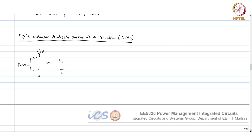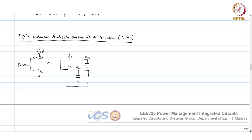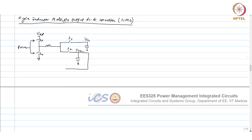To generate two outputs from a single inductor, the two outputs are isolated and each has its own capacitor and load — let's call them output 1 and output 2, with capacitors C1 and C2 respectively.